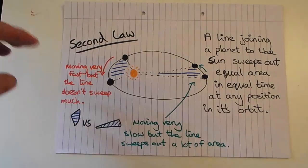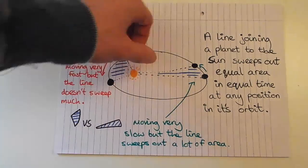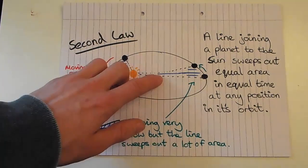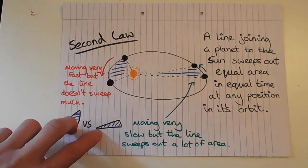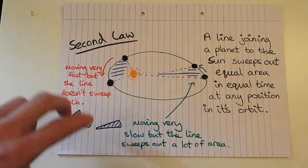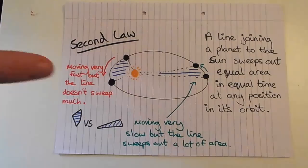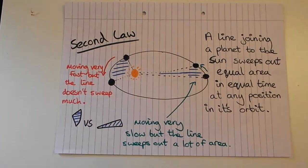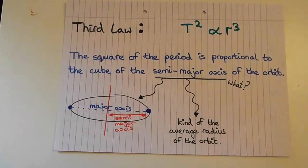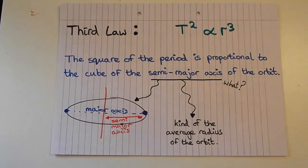Whereas when the planet is very far away, although it's not moving very fast, the line joining the Sun and the planet is very long, so a small angle still gives quite a large area. Kepler said that if you give the same amount of time for the planet orbiting the star, these two areas should be equal — whether the planet moves from here to here close in, or here to here far out, the area swept out is the same.